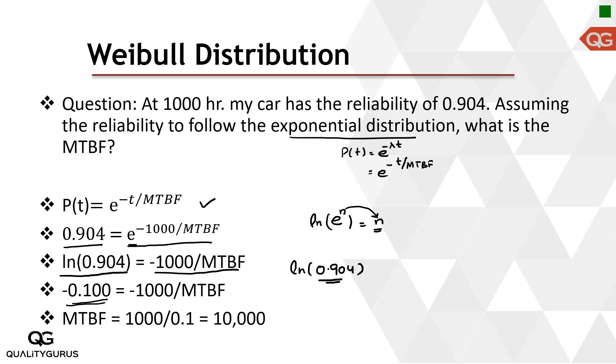Now I can solve this. First thing I will do is remove the minus sign from both sides. MTBF I will take on the other side and 0.1 will go at the bottom of 1,000. So 1,000 divided by 0.1 will be MTBF equals 10,000 hours.